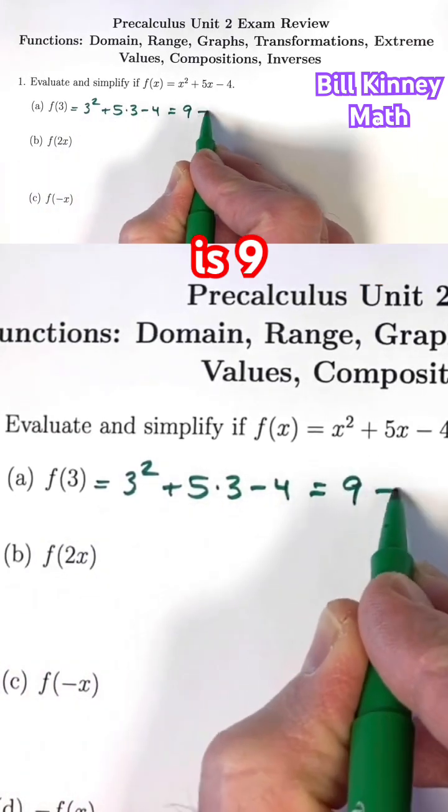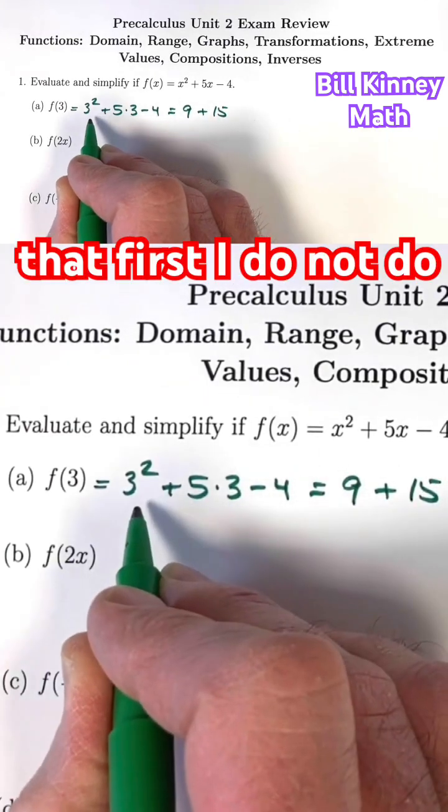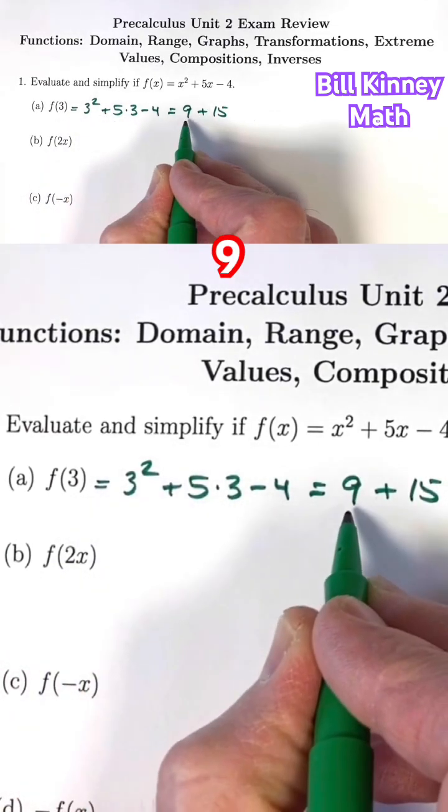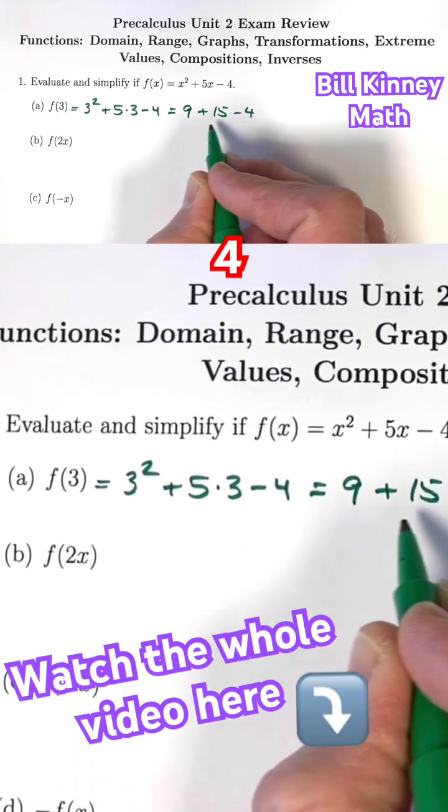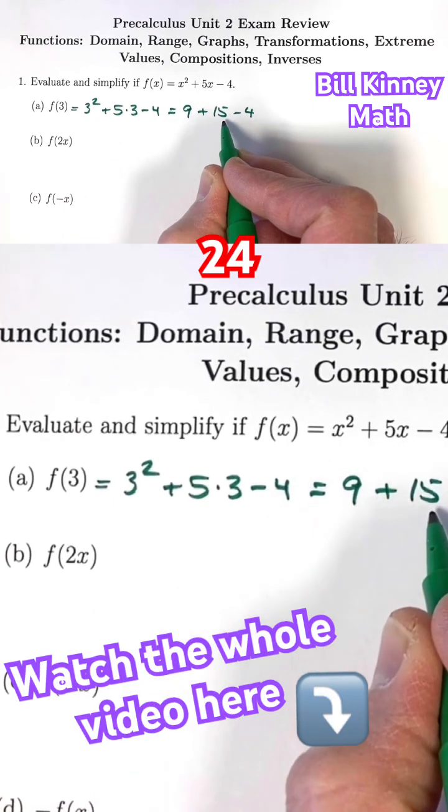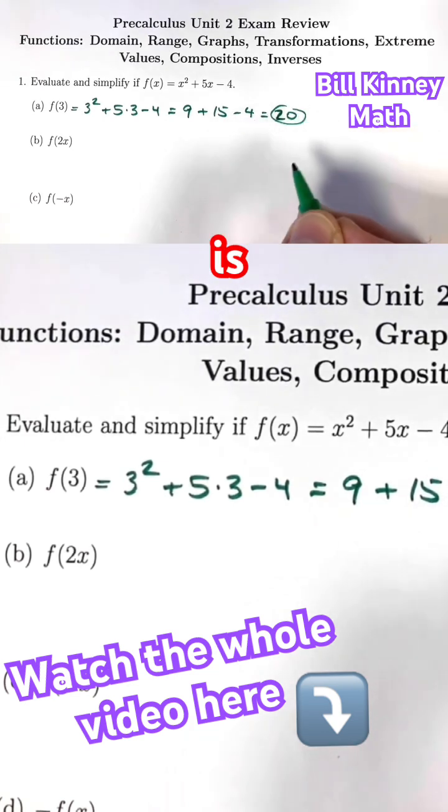3 squared is 9, 5 times 3 is 15. I compute that first. I do not do 9 plus 5, I do 9 plus 5 times 3, which is 15, and then subtract 4. 9 plus 15 is 24, minus 4 is 20. F of 3 is 20.